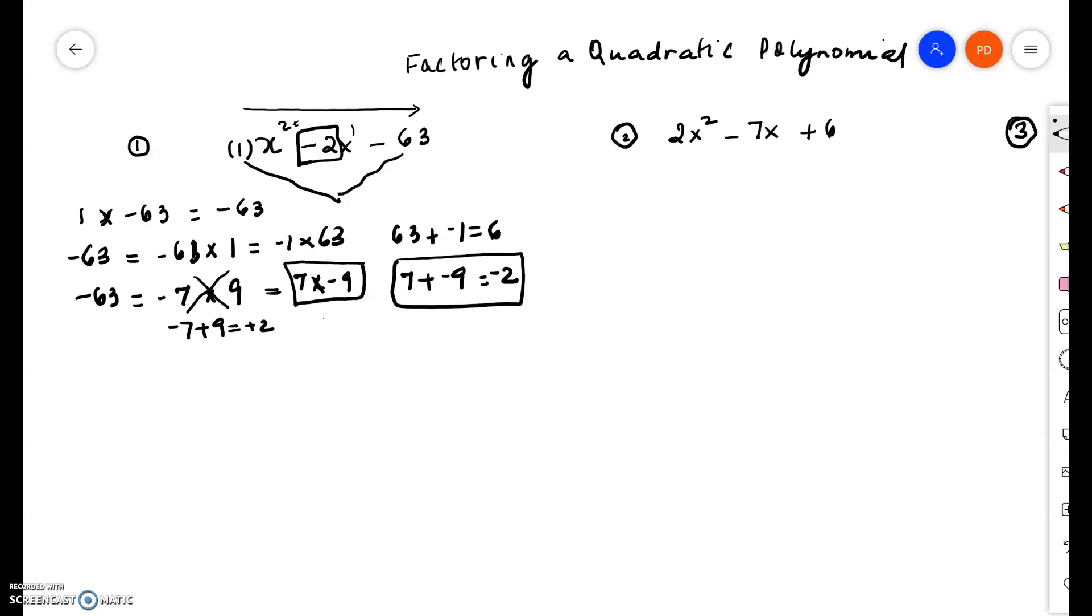Okay, so what do we have so far? 7 times negative 9 is negative 63. And remember that negative 63 is the product of the coefficient of the first term and the constant. So that's negative 1 times negative 63 times 1, which is negative 63.